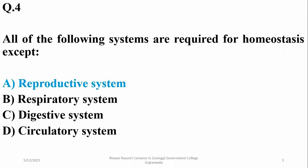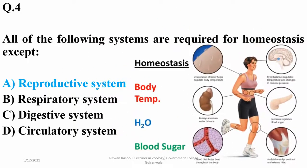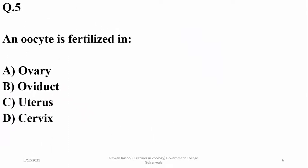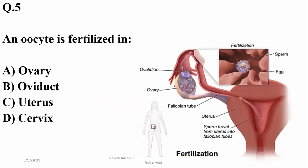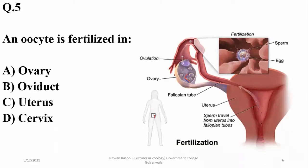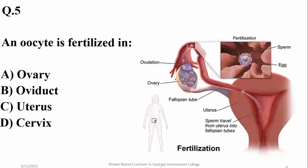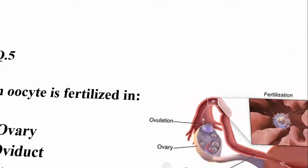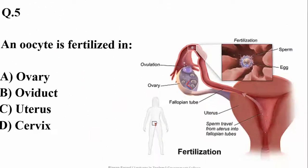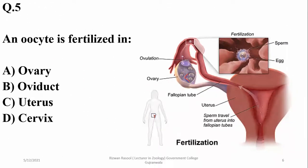Question number four: all of the following systems are required for homeostasis except the reproductive system, because it is required for species maintenance or species homeostasis rather than individual homeostasis. Question number five: fertilization occurs in the oviduct, especially the proximal part of the oviduct, so the right option is beta.